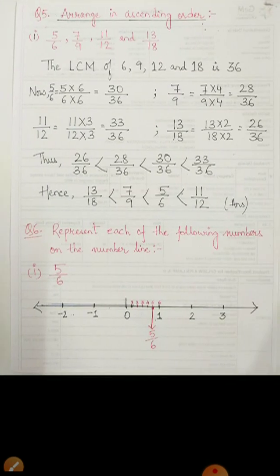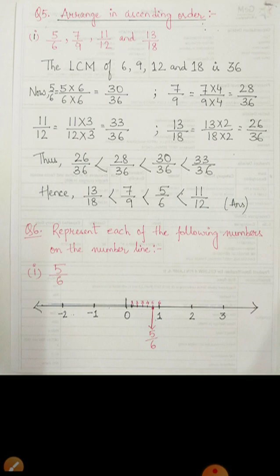Moving on to question number 5: arrange in ascending order. Some rational numbers are given with different denominators. So the first thing we need to do is convert all these numbers into equivalent fractions. To do that, we first find the LCM of all the denominators. The LCM of 6, 9, 12, and 18 is 36.